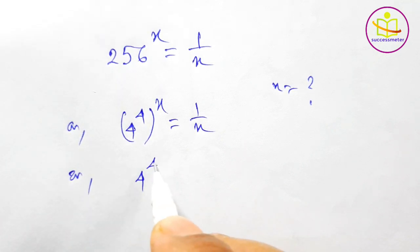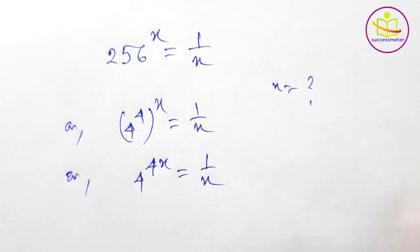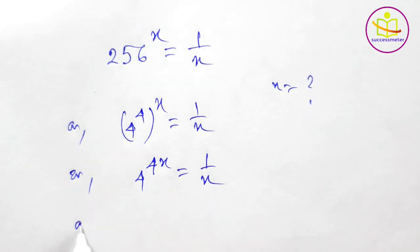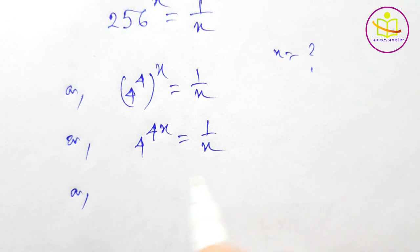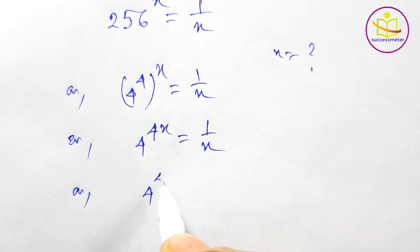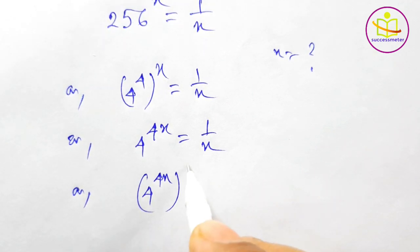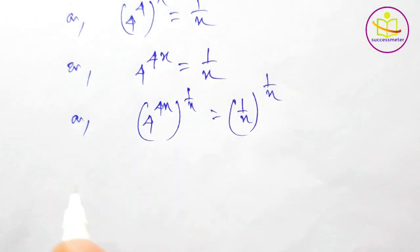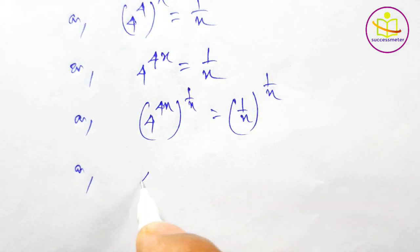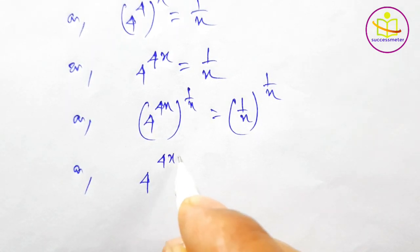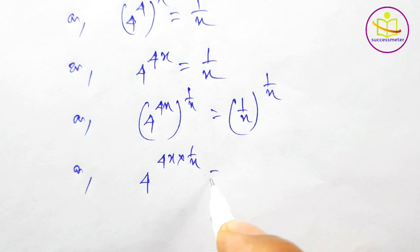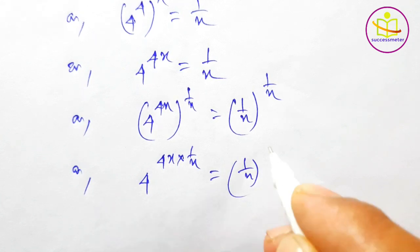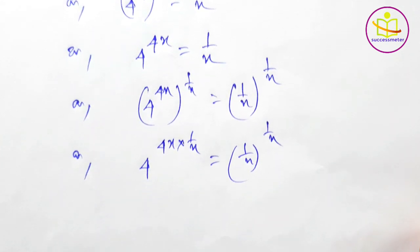So 4 to the power 4x is equal to 1 by x. Raising both sides to the power 1 by x: 4 to the power 4x whole to the power 1 by x is equal to 1 by x whole to the power 1 by x. This gives 4 to the power 4x times 1 by x is equal to 1 by x to the power 1 by x.